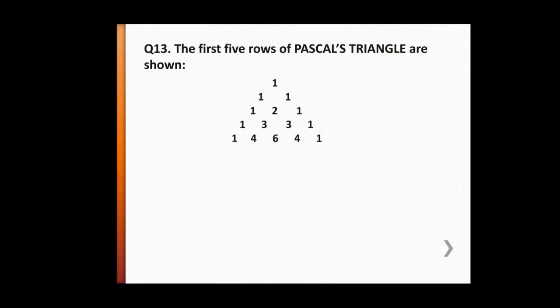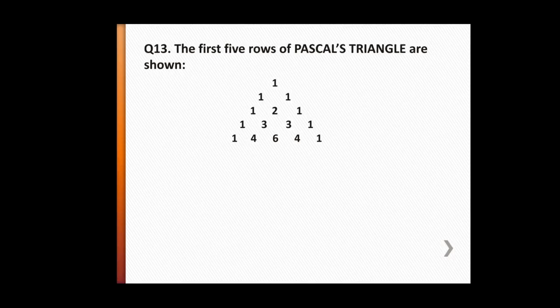Looking at the triangle in the textbook, the first line is just 1. The second line is 1, 1. The third line is 1, 2, 1. The fourth line is 1, 3, 3, 1. The fifth line is 1, 4, 6, 4, 1. There is a defined rule behind this pattern.